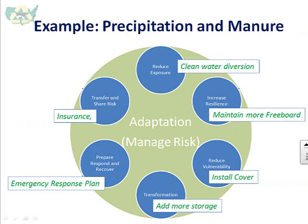Another example: precipitation and manure management, thinking about intense rainfall events. Reducing exposure might mean clean water diversions to keep less water entering the manure storage structure. Increasing resilience might mean maintaining more freeboard on the manure storage structure. Reducing vulnerability could include installing a cover. Transformation involves long-term planning for adding more storage or changing the system. As with all manure management planning, there's always a need for an emergency response plan, and we can also use insurance to transfer and share risk.